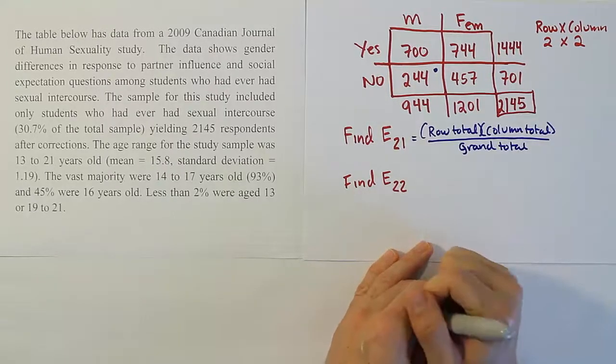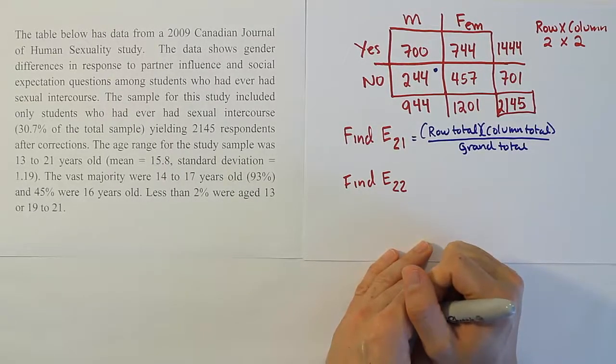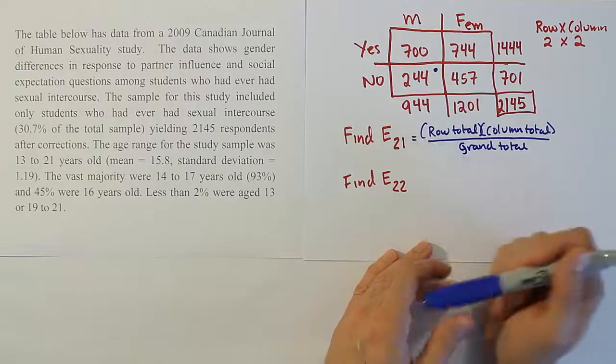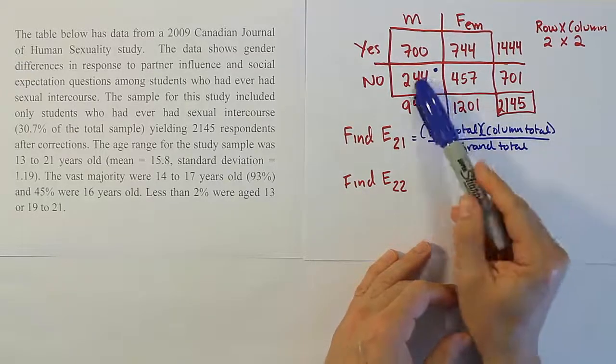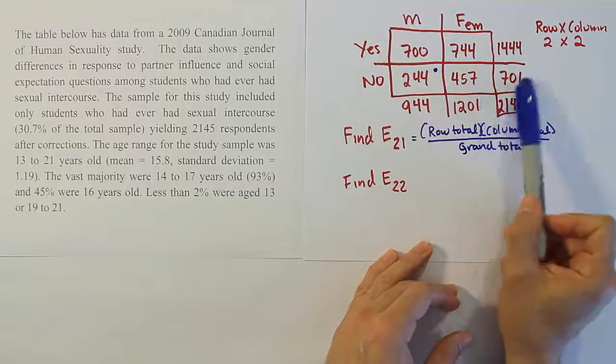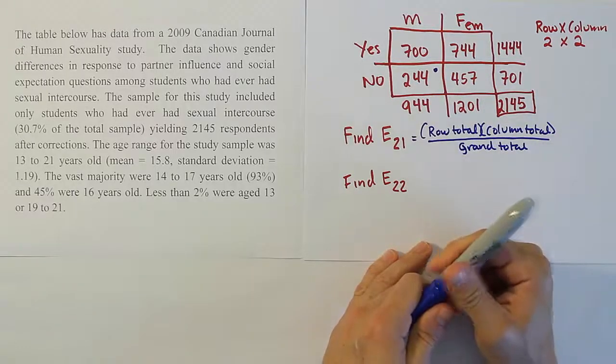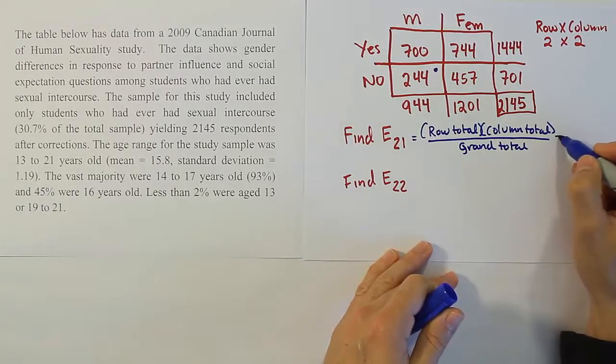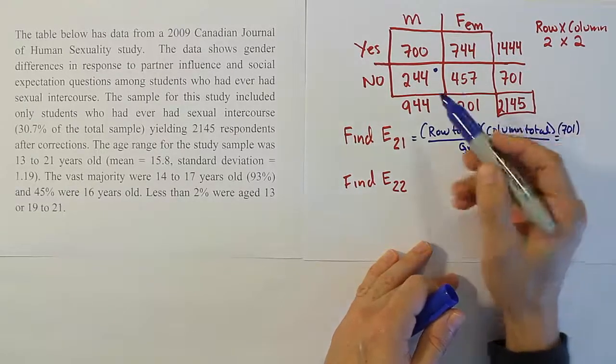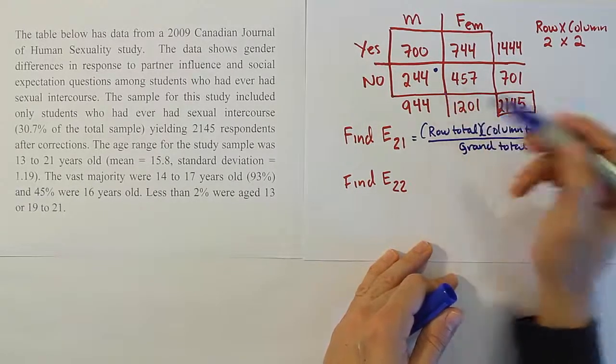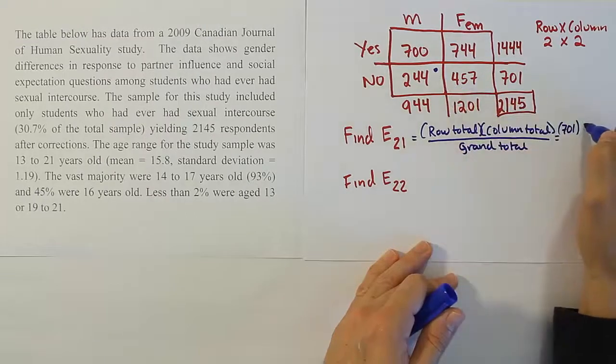That's it. That's all you have to do. So we're going to just fill in those numbers for this particular problem. You're talking about the row total. So this cell is in this row and the total there is 701. So it's going to be 701 times the column total.